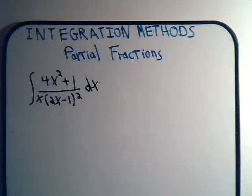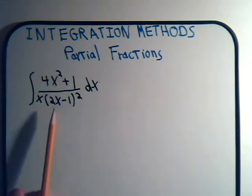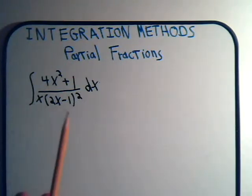Okay, in this video we're going to attempt to solve the integral of 4 times x squared plus 1 divided by x times 2x minus 1 quantity squared. A u du type substitution does not work out at all. We tried that previously.